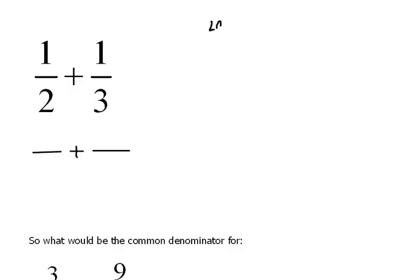Another term for the least common denominator is the least common multiple. We look at the multiples of 2 and the multiples of 3. The multiples of 2 would be things like 2, 4, 6, 8, and so on. The multiples of 3 would be 3, 6, 9, and continuing on. We're going to find the least, or smallest, multiple that they have in common, and in this case, for 2 and 3, that would be 6.